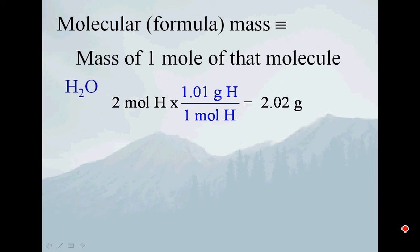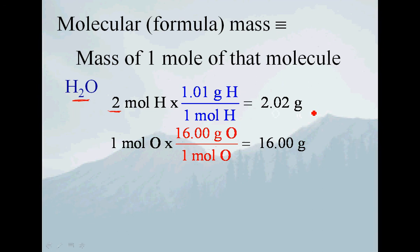So to figure out the mass of one mole of a molecule, it's relatively easy. I just add up the individual masses of all the things in there. So for H2O, I have two moles of hydrogen. Each mole of hydrogen weighs 1.01 grams, so I've got a total of 2.02 grams coming from the hydrogen. There's one oxygen at 16 grams, so I get a mass for one mole of water of 18.02 grams.